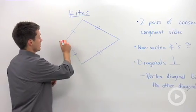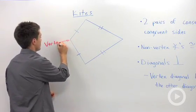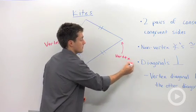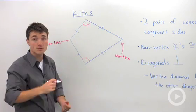If you want to call this angle a vertex angle and this angle a vertex angle, then these two non-vertex angles will always be congruent.